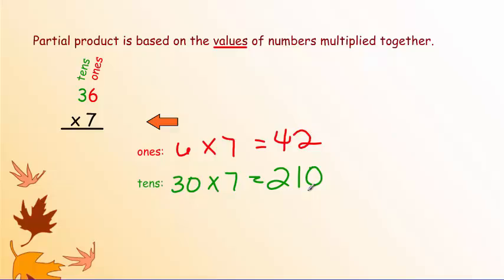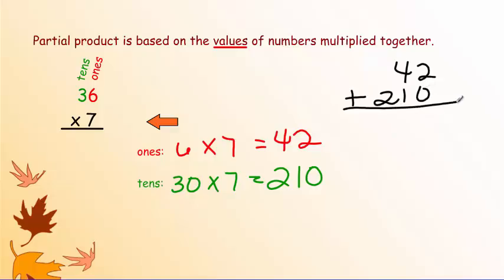These are your partial products. Now we need to find the sum of the two partial products. Rewrite them to the right: 42 plus 210. Add them together: 2 plus 0 is 2, 4 plus 1 is 5, and 2 plus nothing is 2. The value of 36 times 7 is 252.